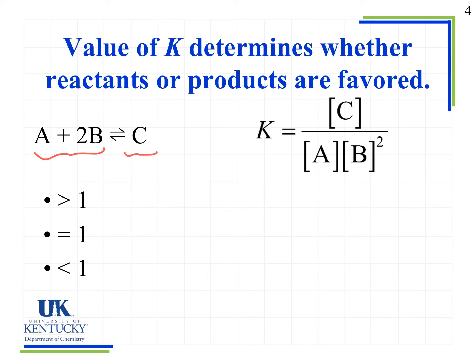Let's first look at when the value of K is greater than 1. When we look at a value of K greater than 1, what that tells us is that the numerator is larger than the denominator. The numerator is on top, it's larger than the denominator on the bottom because that's the only way we could get a value greater than 1.